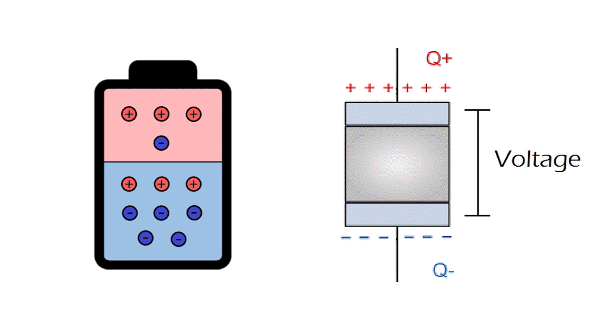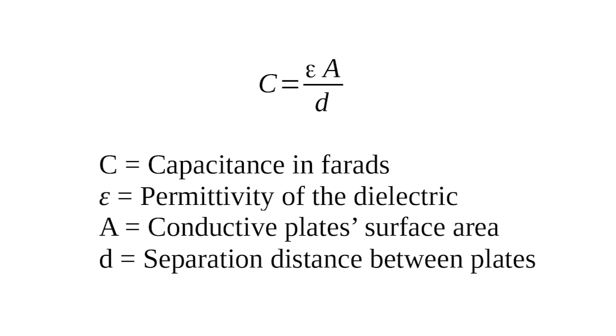In a certain way, capacitors work like batteries, except they are generally used to charge and discharge many times in the lapse of a single second. As shown in the following formula, capacitance, that is, the ability of a capacitor to store charge is inversely proportional to the separation distance between the plates. That is, the lesser the distance, the greater the capacitance.